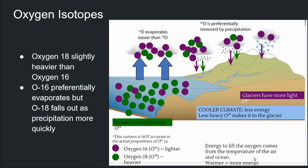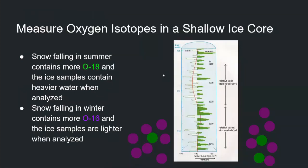If your climate is warmer, it means you have more energy to evaporate, so you are going to take more O18 than usual. And we can measure that amount of isotopes in shallow ice cores.